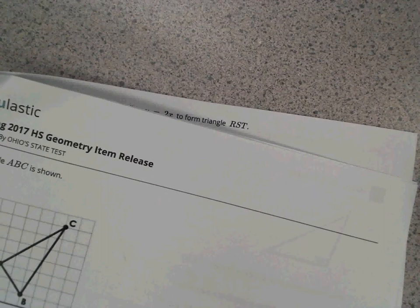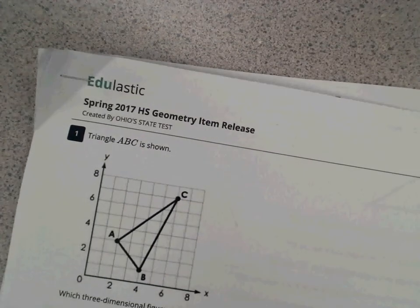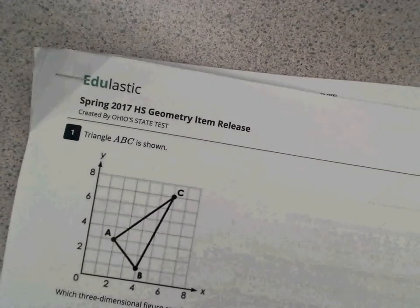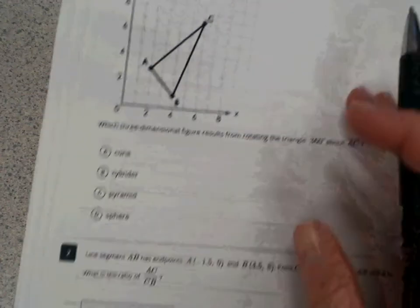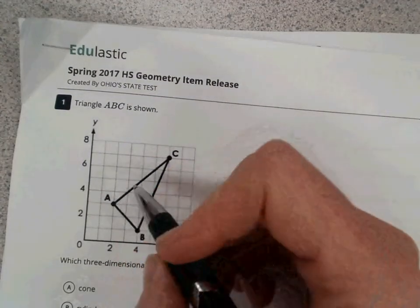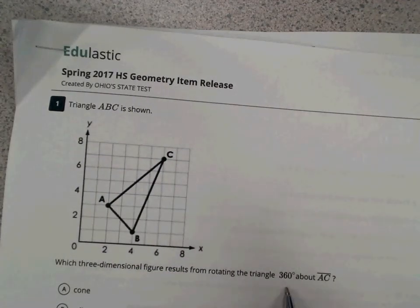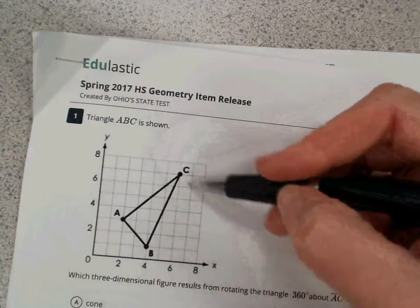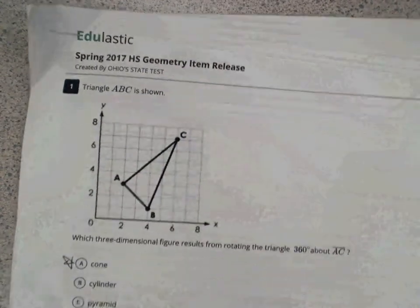In this video, I am explaining a few questions from the spring 2017 released questions from the geometry end of course test. We talked about question 2 in my other video, and question 1 is really a matter of visualization where you can visualize the three-dimensional figure rotating a 360-degree rotation about this line AC here. And so if you can really imagine what that would look like as that spins around, it would be a cone as a three-dimensional shape.